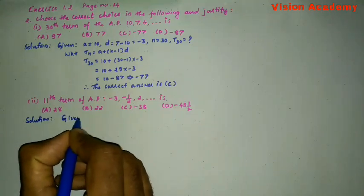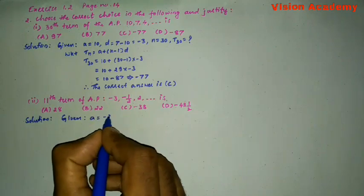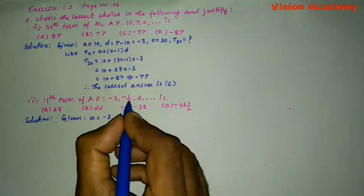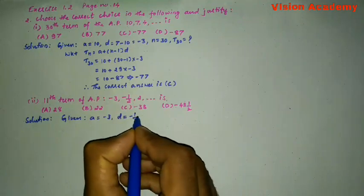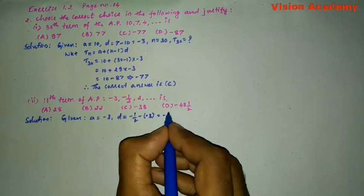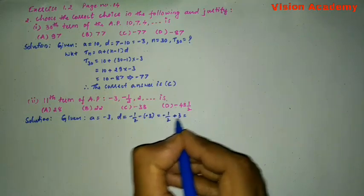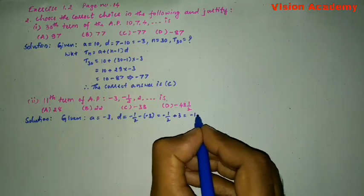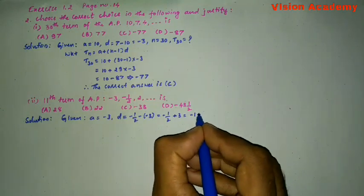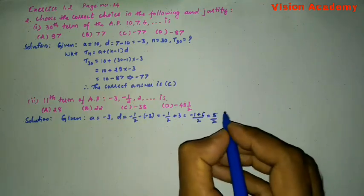Let us write first given. The first term A is equal to minus 3 and the common difference D is equal to minus 1 by 2 minus of minus 3, which gives me minus 1 by 2 plus 3. That's 6 minus 1 over 2, which is 5 by 2.